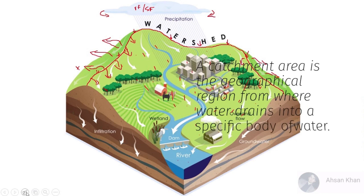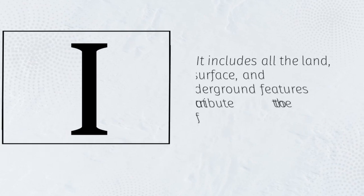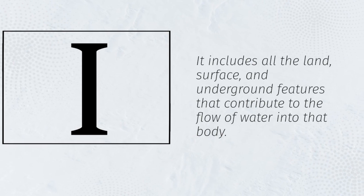A catchment area is the geographical region from where water drains into a specific body of water. It includes all the land, surface, and underground features that contribute to the flow of water into that body.